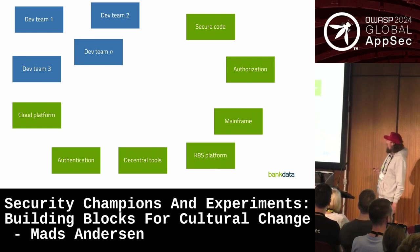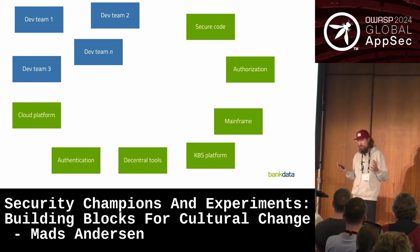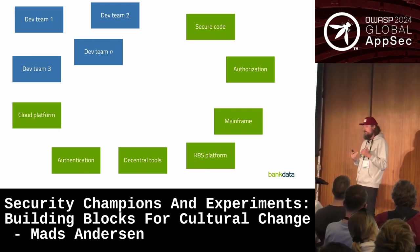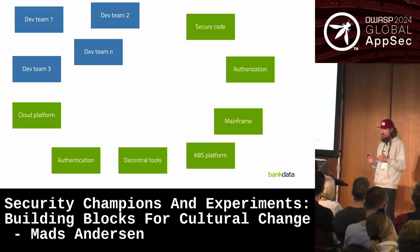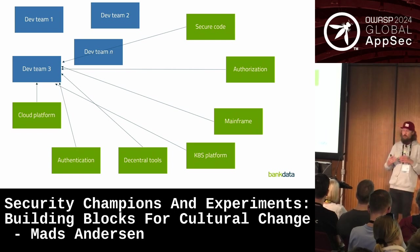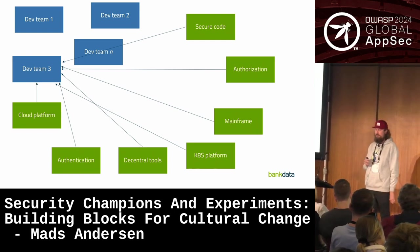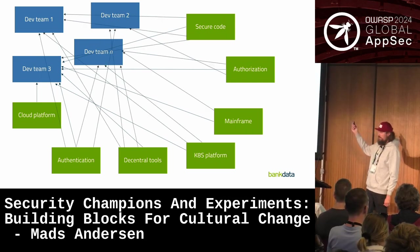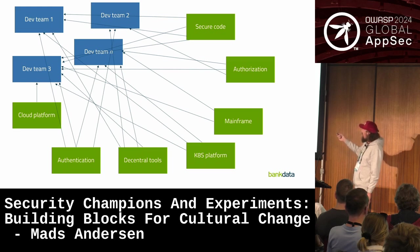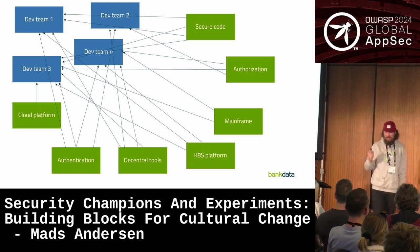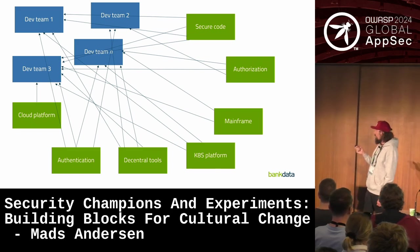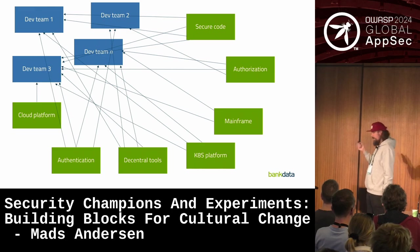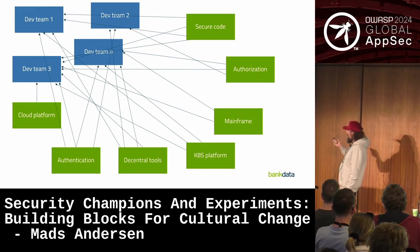Whenever a dev team needed to figure out how to make reasonable decisions on application security, they basically needed to go out and get information from all these different teams. This is just one team, and we're 80 developer teams — so the amount of errors going back and forth is not ideal. It's probably a lot of redundant information being communicated, and there's really nobody capturing the questions in a central place.